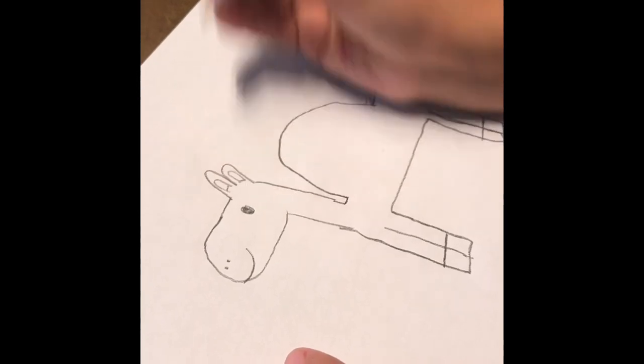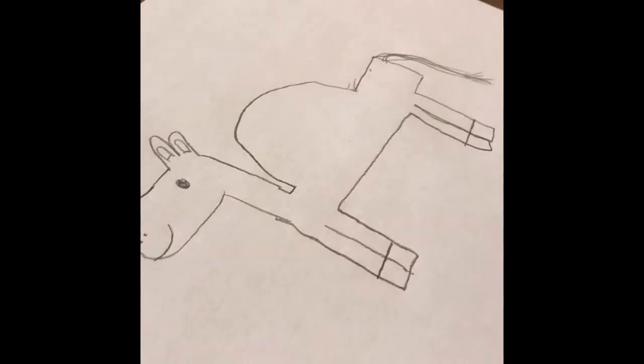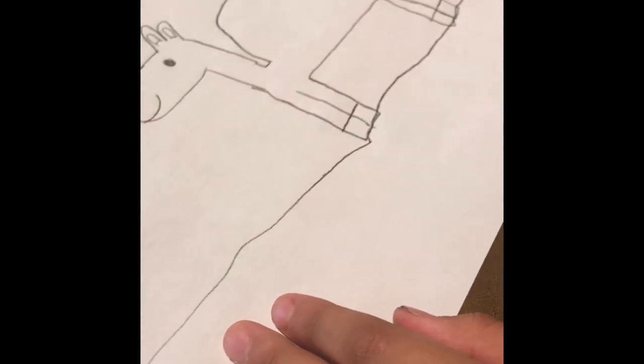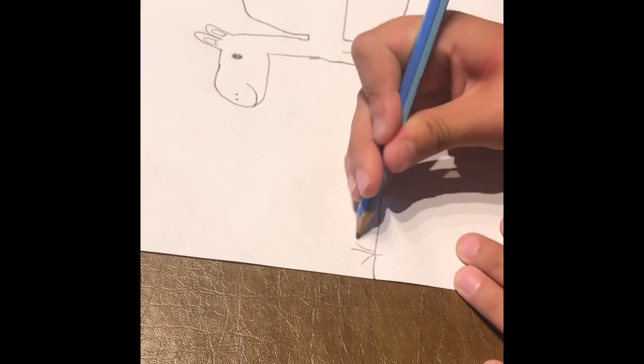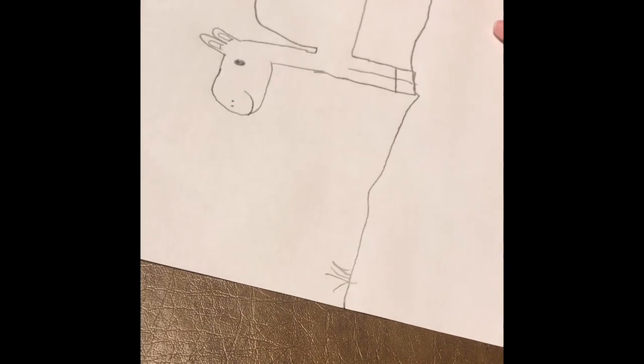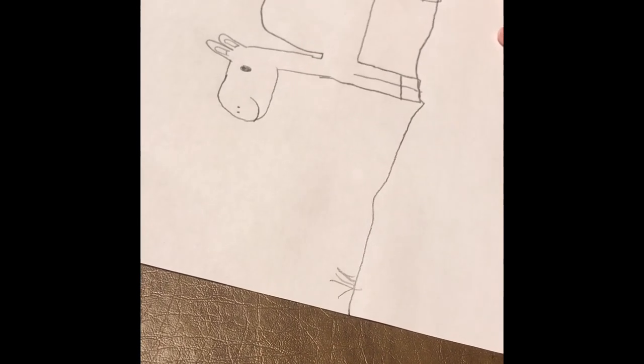And do a line cross. And then here is our camel. Draw ground so it looks like he's standing and not floating. There. Add some grass or details to your place and stuff.